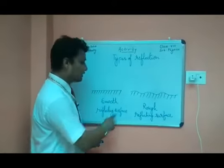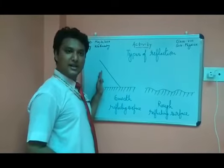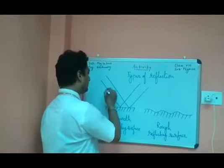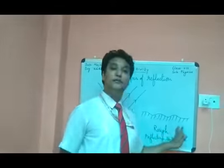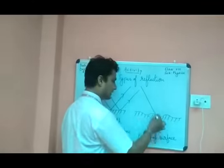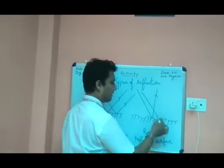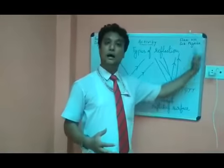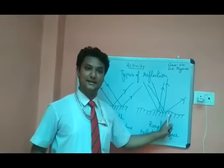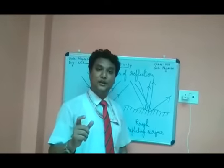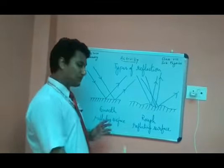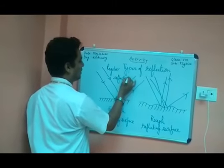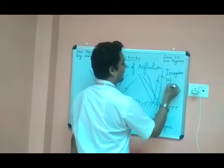When you have a smooth reflecting surface, the incident light bounces in a certain consistent direction — these are your reflected rays. In the case of a rough reflecting surface, the light may bounce in many different directions with no fixed pattern, depending on which direction it hits the surface. This is similar to when you play with a bouncy ball on an uneven surface.